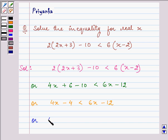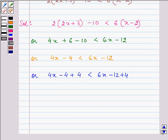On adding 4 to both the sides we have 4x minus 4 plus 4 will get cancelled, is less than 6x minus 12 plus 4 will be simplified. And we have 4x is less than 6x minus 8.